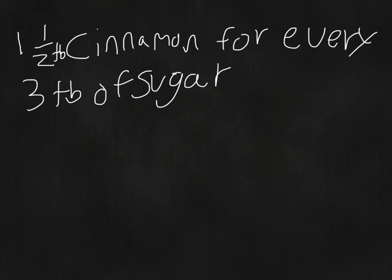In this video, the Teach to Learn Foundation will help you answer a proportions question. The question states, list two other amounts of cinnamon and sugar, one larger and one smaller, that are proportional to one and a half tablespoons of cinnamon for every three tablespoons of sugar.